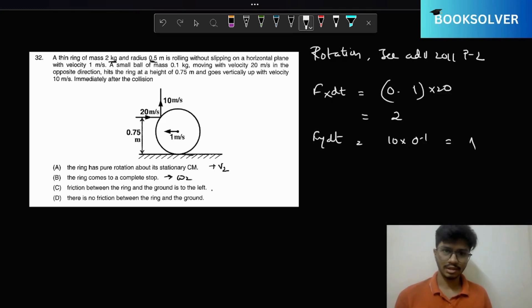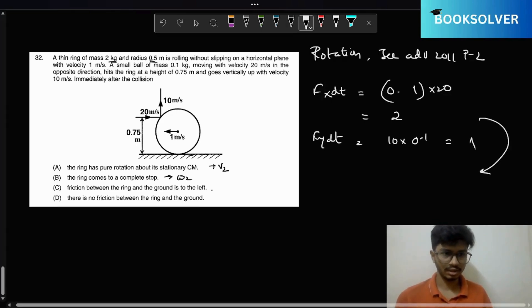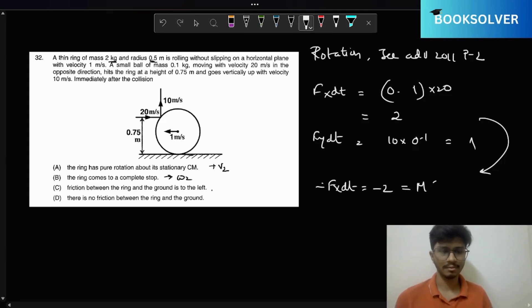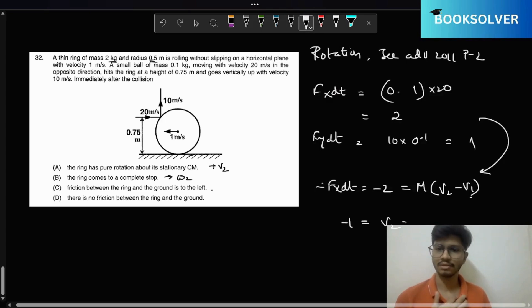So we can say from here that minus Fx dt equals minus 2, which is equal to M v2 minus M v1, and v1 is 1. So minus 1 equals v2 minus 1. This gets cancelled, v2 comes out to be 0.